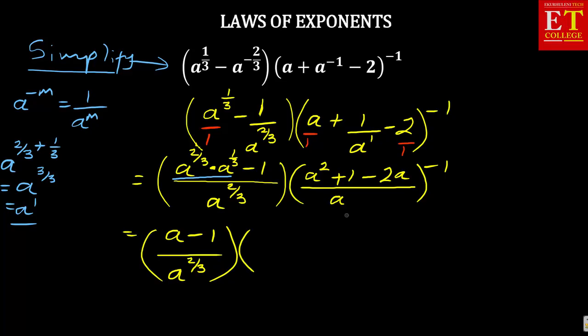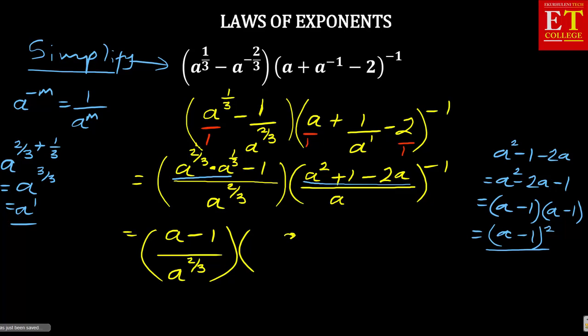The one that is inside the bracket, which is a squared minus 1 minus 2a, is same as a squared minus 2a minus 1. And if you solve it, you are going to have a minus 1 and a minus 1,